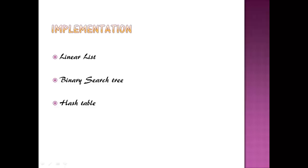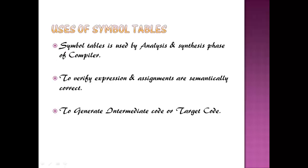Uses of Symbol Table: Symbol Table information is used by analysis and synthesis phase of compiler. It is used to verify expression and assignments are semantically correct, i.e. type checking. Next is to generate intermediate or target code.